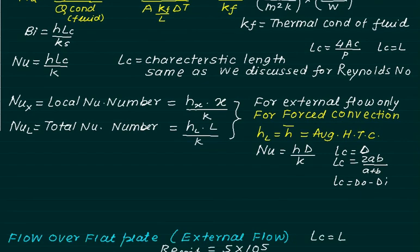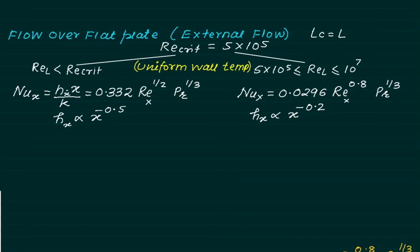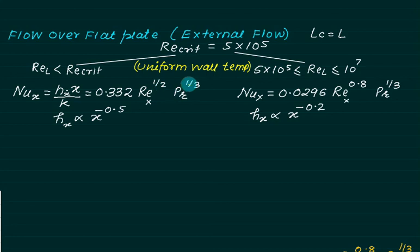For external flow over a flat plate, the critical Reynolds number is 5 times 10 to the power 5. If Re is less than Re_critical, flow is laminar; if Re is between 5e5 and 1e7, it is a laminar-plus-turbulent region. For laminar flow, the local Nusselt number is Nu_x equals 0.332 Re_x to the power 0.5 times Pr to the power 1/3, giving h_x proportional to x to the power minus 0.5. For turbulent flow, the coefficient is 0.0296 and Re_x to the power 0.8, giving h_x proportional to x to the power minus 0.2.